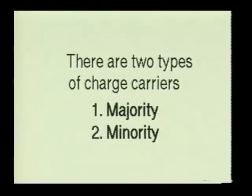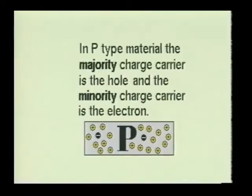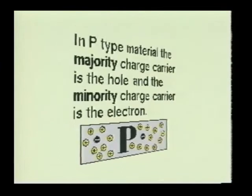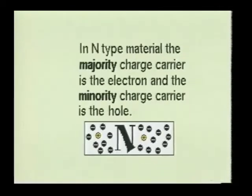Semiconductor materials have majority and minority charge carriers. The majority charge carrier in the P-type material is the hole, while the minority charge carrier is the electron. The majority charge carrier in the N-type material is the electron, and the minority charge carrier is the hole.